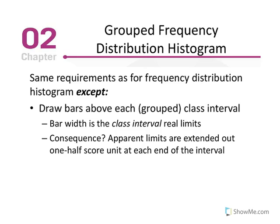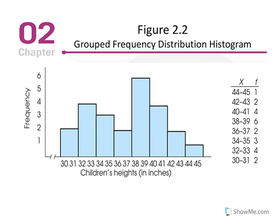Group frequency distribution histogram, same requirements as the frequency distribution histogram, except that we draw bars above each group or class interval. The bar width is a class interval of real limits, and the consequence is the apparent limits are extended out one half of a score unit, each end of the interval. So we can apply the concepts of a frequency histogram to a group frequency histogram, but the x-axis looks a little different, and here's an illustration. So again, we have our class intervals here, represented by our x values, and the ranges are denoted on the abscissa, the frequency on the ordinate.